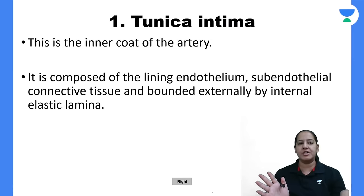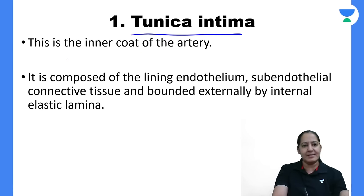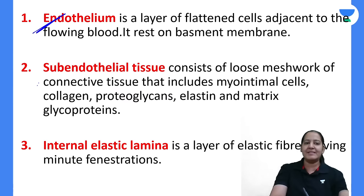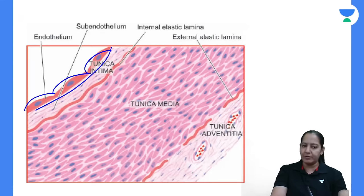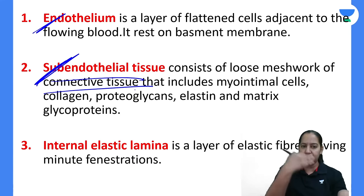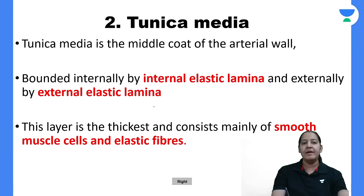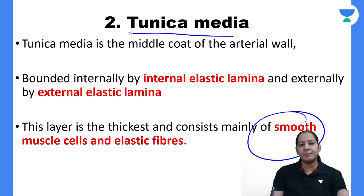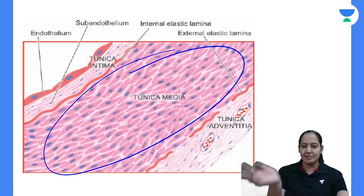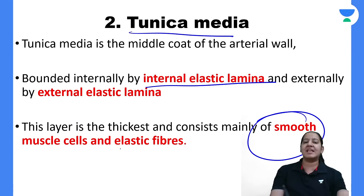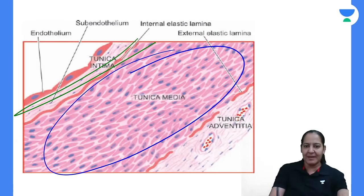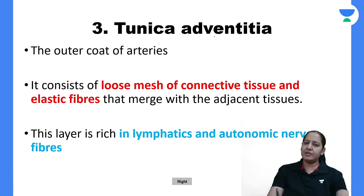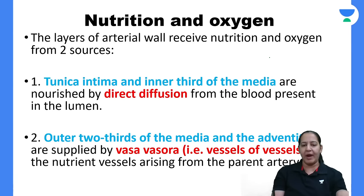Tunica intima is the innermost coat containing endothelium — a flattened layer of endothelial cells — and subendothelial tissue, which is connective tissue made up of collagen and proteoglycan just below the endothelium. Tunica media is made up of smooth muscle cells, bounded by the internal and external elastic laminae. Tunica adventitia is the outermost layer of loose connective tissue.